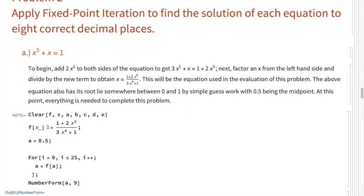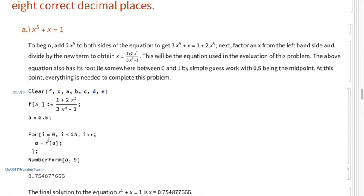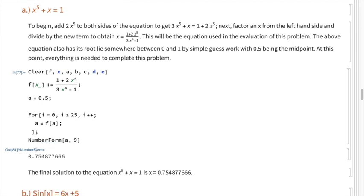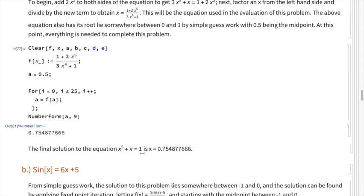We define our function f(x) using the expression found above, declare a variable a equal to the midpoint 0.5, and enter our loop. All we need to do is set a equal to the evaluation of f(a) and run this calculation over and over to get our final numeric answer. Evaluating a to nine digits of precision gives us 0.75487 as our solution — the same answer we got with the bisection method.